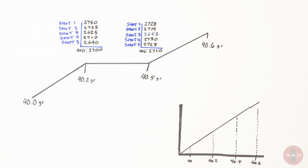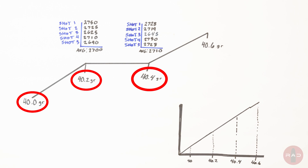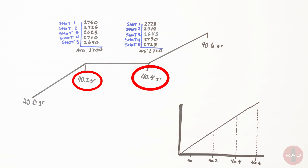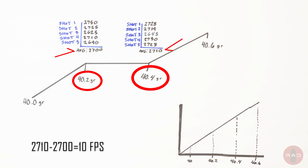As an example, let's say you shoot 40, 40.2, 40.4, and 40.6 grains of powder. We can see there's a flat spot between 40.2 and 40.4 grains. The delta, or the flat spot, has a 10 feet per second difference between each, which creates the flat spot on our graph.